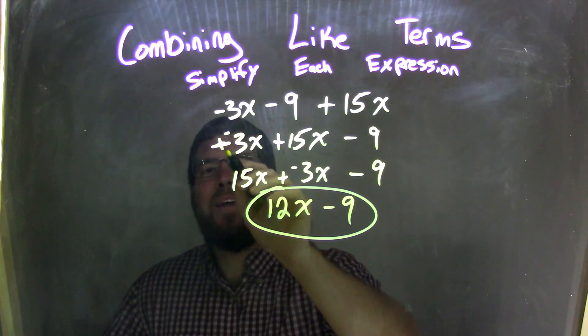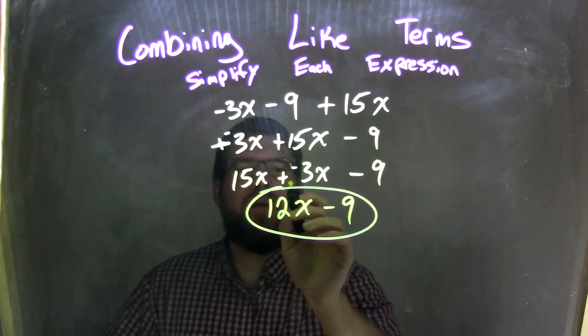Well, I made that minus 3x to be like plus negative 3x. So I use the commutative property again. It might be easier to see, actually. So I rearranged 15x plus negative 3x, and hopefully that was easier for you to see.